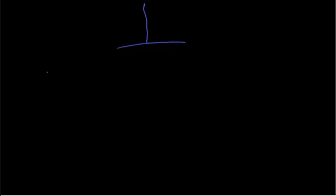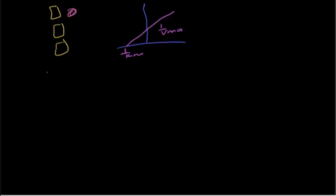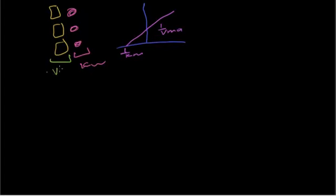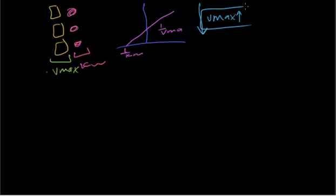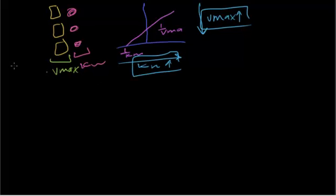Quick summary: the y-axis is 1 over Vmax, the x-axis is 1 over KM. We see three enzymes and three substrates — the substrates relate to KM and the enzymes relate to Vmax. Going from up to down, Vmax increases; going from left to right, KM increases. This is the control curve.